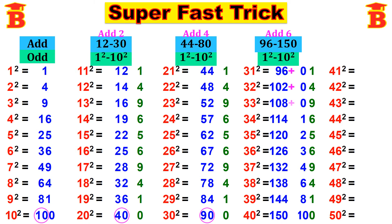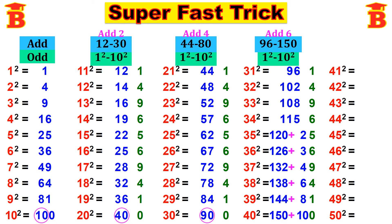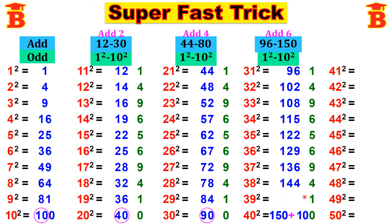Now we have to add the tens place. 96 plus 0 is 96. 102 plus 0 is 102. 108 plus 0 is 108. 114 plus 1 is 115. 120 plus 2 is 122. 126 plus 3 is 129. 132 plus 4 is 136. 138 plus 6 is 144. 144 plus 8 is 152. 150 plus 10 is 160.